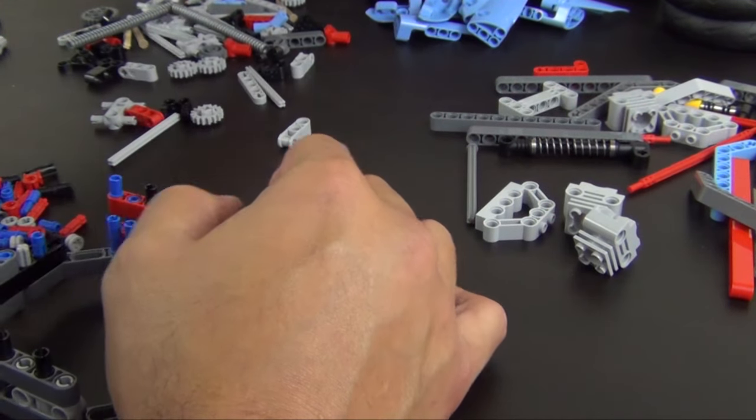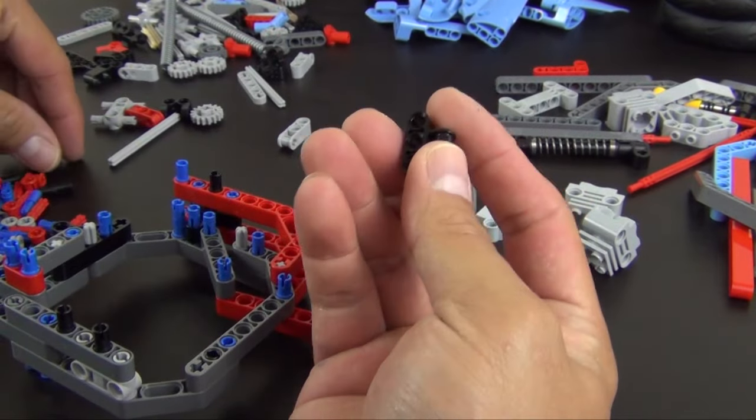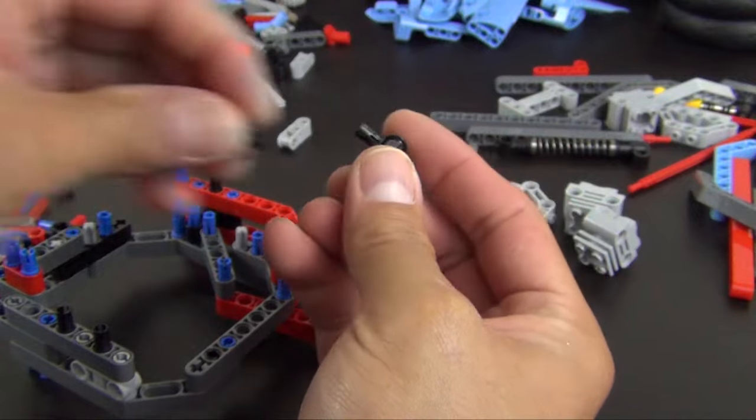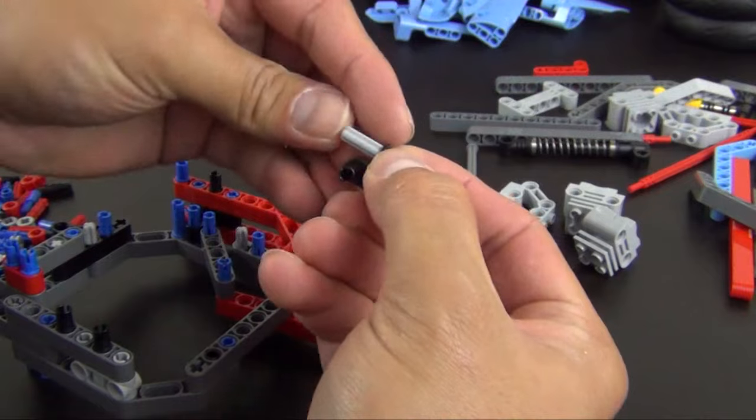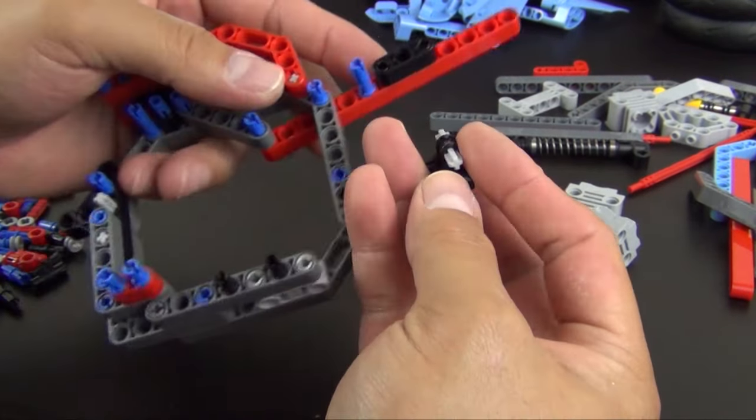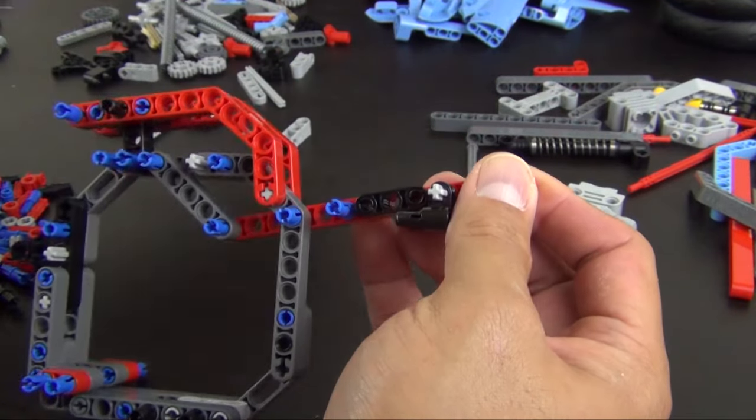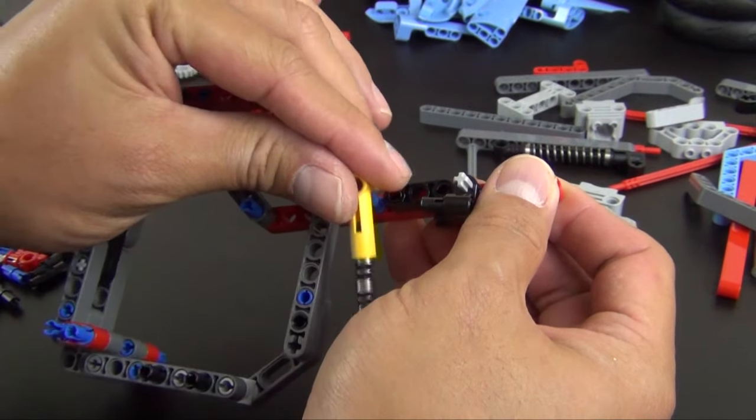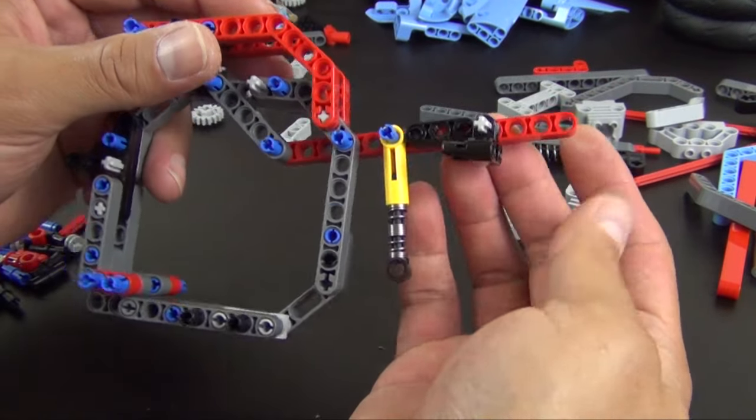All right, next. A couple friction pins and a three long axle. That'll go there. And we have a shock absorber. Goes there.